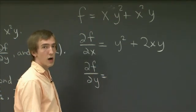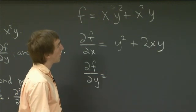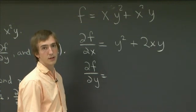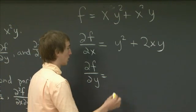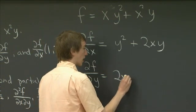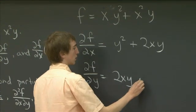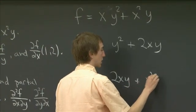For the partial derivative in the y direction, we do the same thing, except now x is a constant, and we're taking an ordinary derivative in the y direction. So we have 2xy plus x².